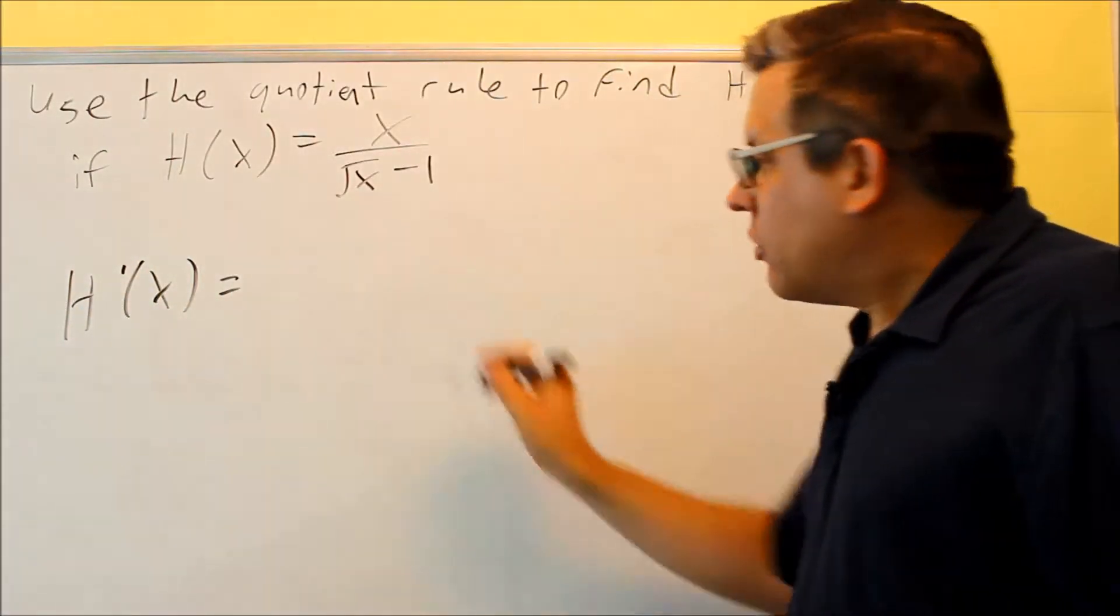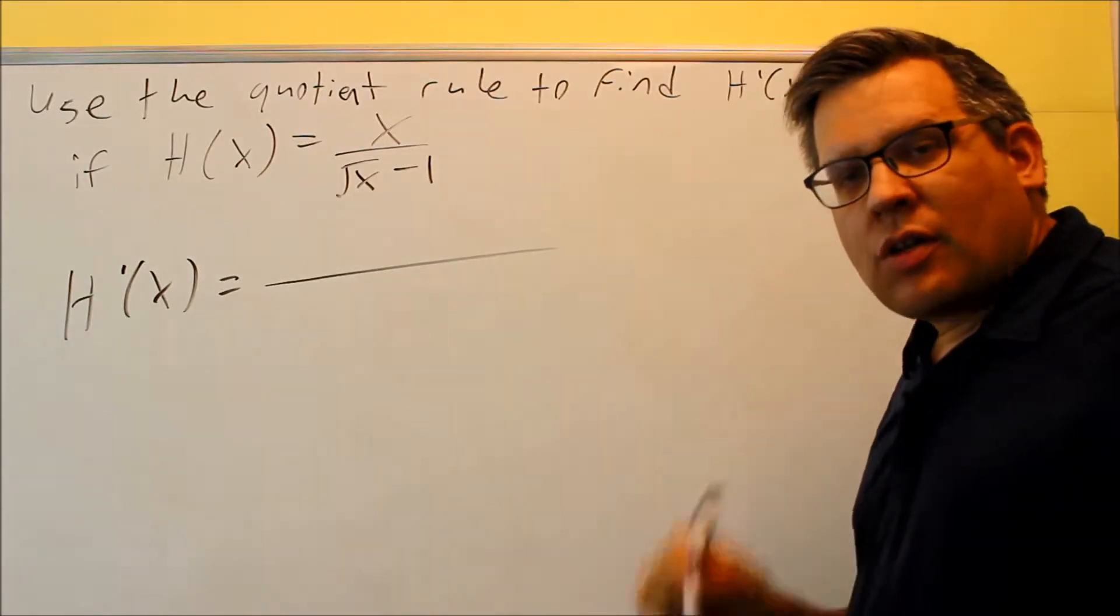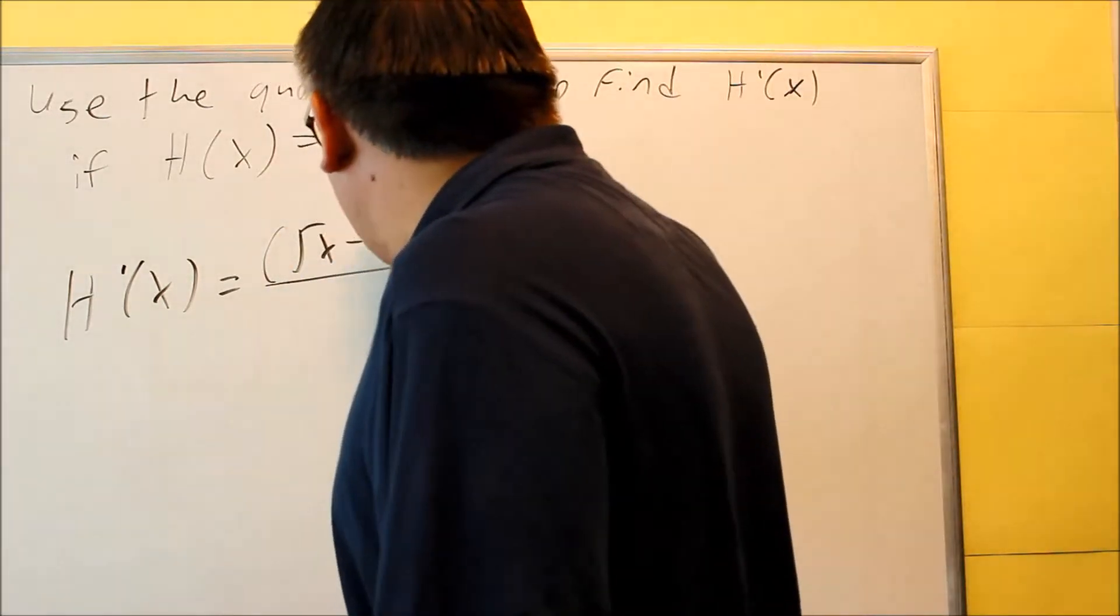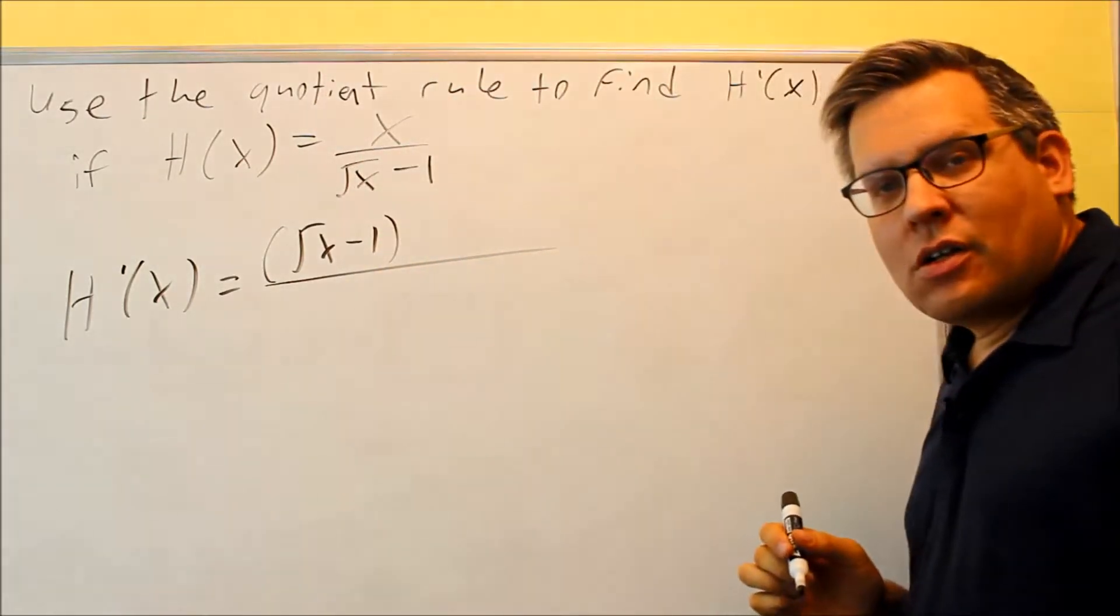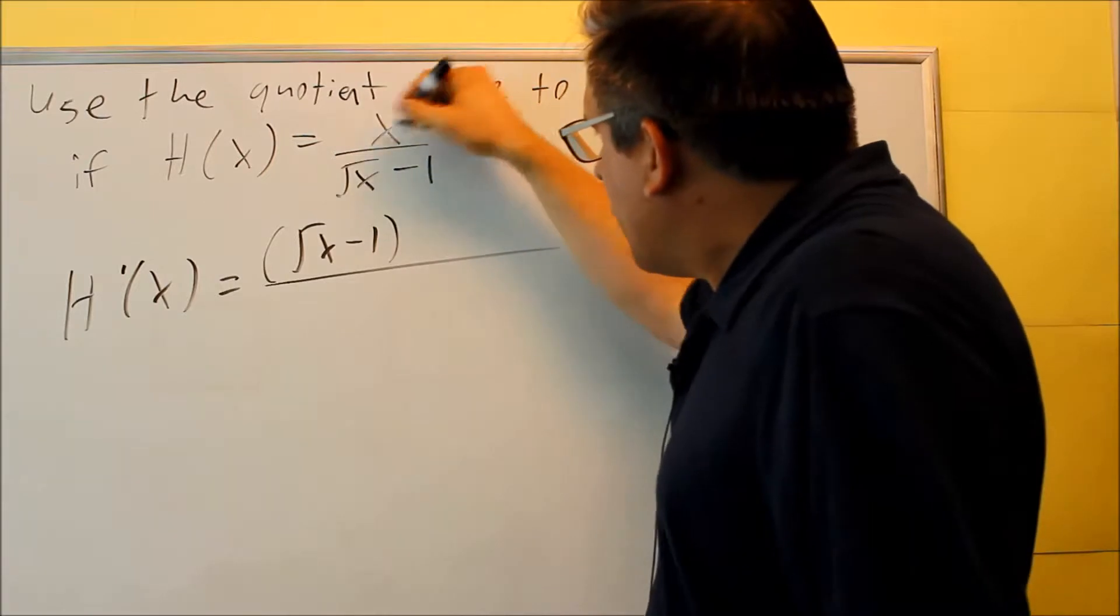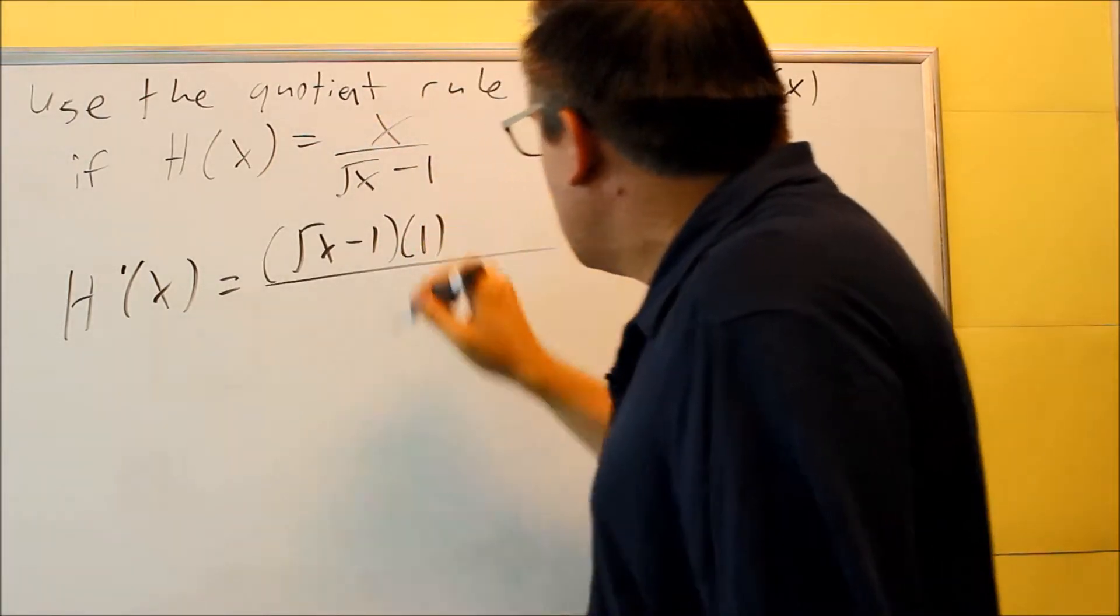Okay, so the formula works, always goes the bottom times the derivative of the top. The bottom is square root of x minus 1, that would be your g, times the derivative of the top, that's your f prime. The derivative of x is 1.